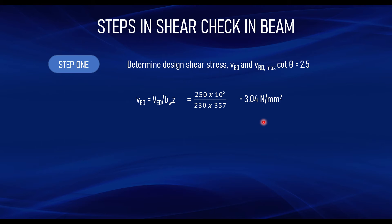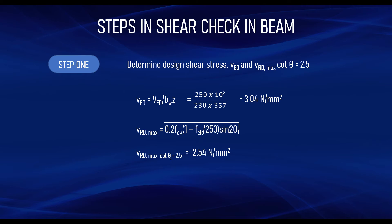The next step is to determine vRd,max at the two limiting angles. Substituting into the vRd,max formula: when cot theta = 2.5 (theta = 21.8°), vRd,max = 2.54 N/mm². When cot theta = 1 (theta = 45°), vRd,max = 3.68 N/mm². Note that the full presentation with these formulas will be available in the video description for download.